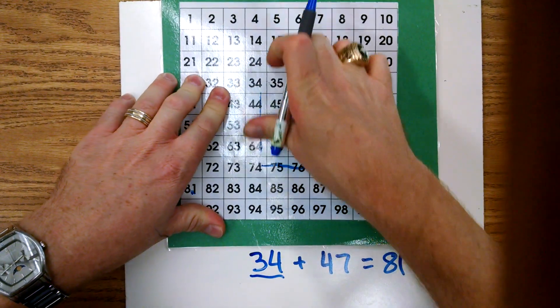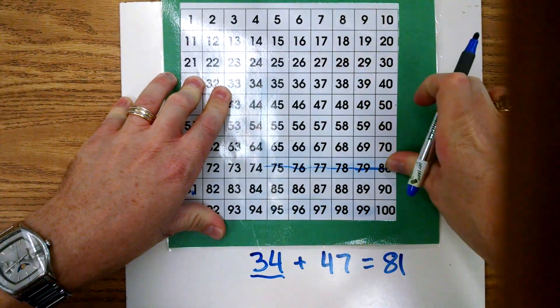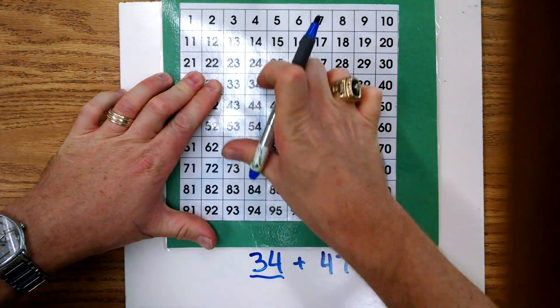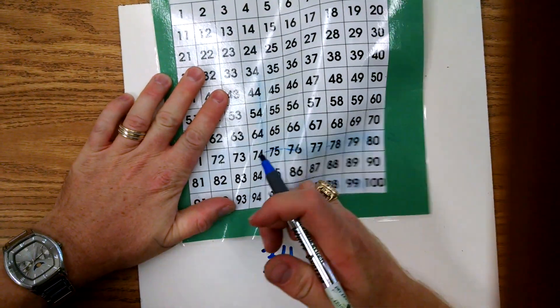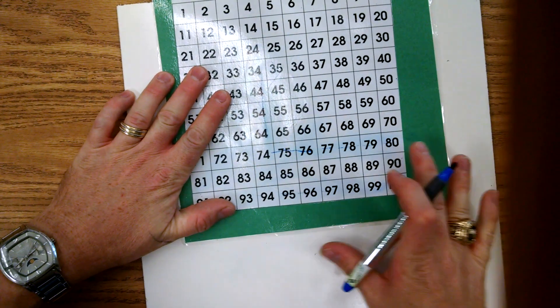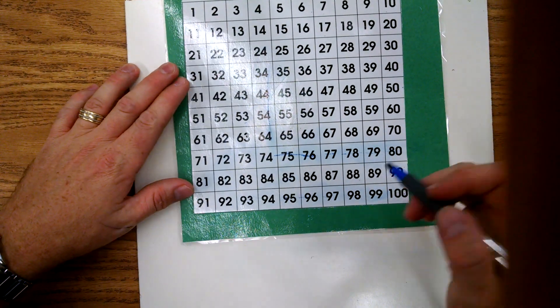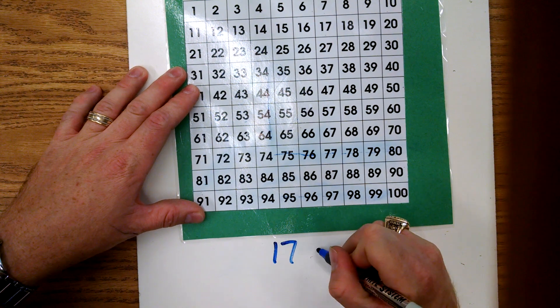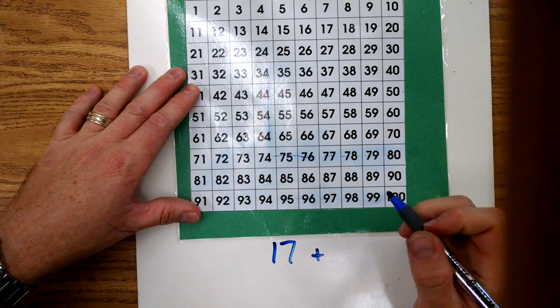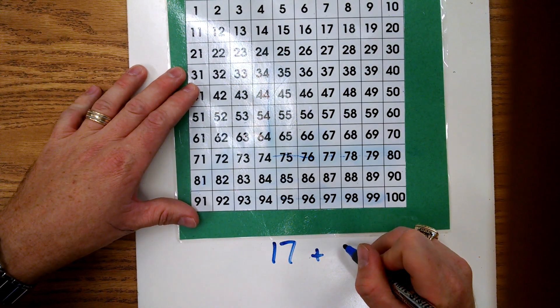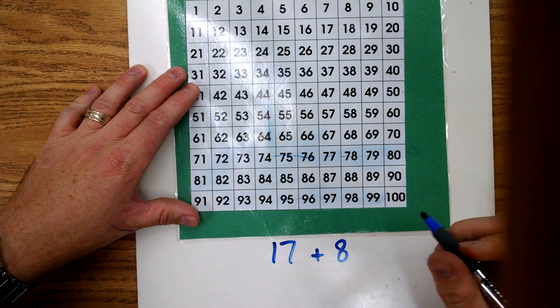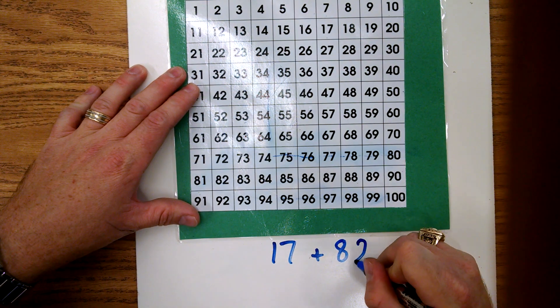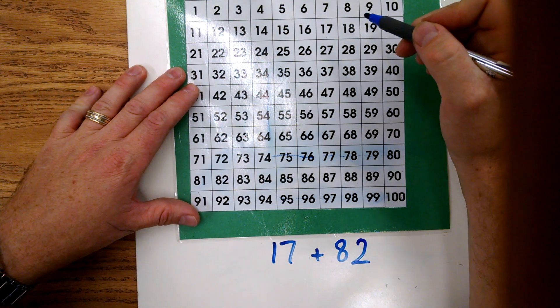Okay, let's try one more and then you can give it a try at your house. And if you still don't get it you can watch this again as many times as you need to. Let's start with, let's do 17 this time, plus let's do a big one, 82. Just as easy.